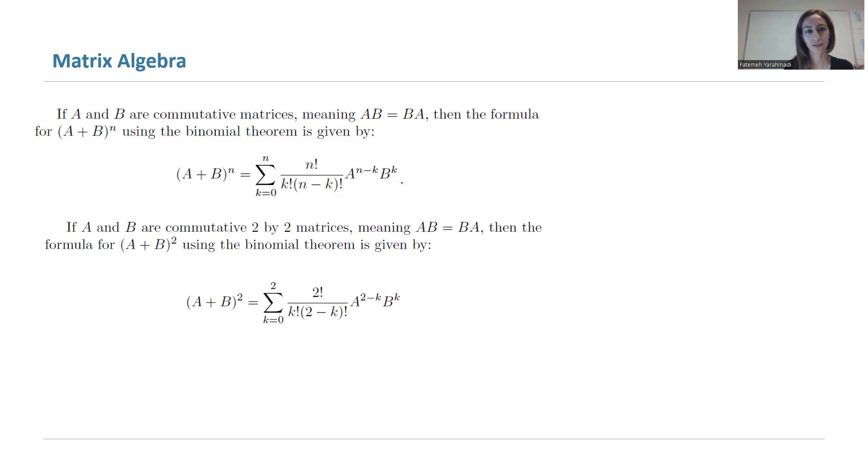For example, if you have two commutative 2 by 2 matrices, then the binomial theorem says (A + B)² equals the summation of 2 factorial...